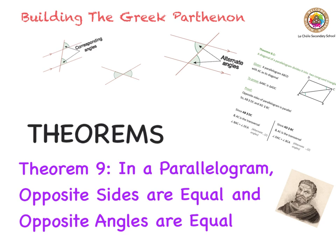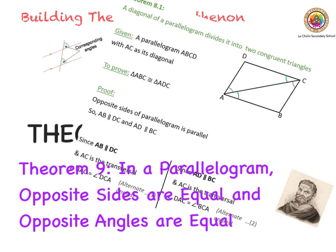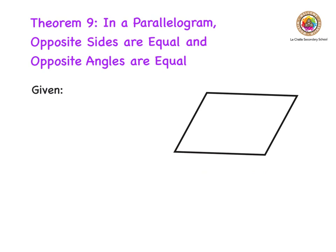Continuing on, building the Greek Parthenon today. We're looking at Theorem number nine, and that is that in a parallelogram the opposite sides are equal. We can see here we have a parallelogram, so this side here is equal to this side here, and this side here is equal to this side here. Then, opposite angles are equal: angle D is equal to angle B, and angle A is equal to angle C. That's what we're going to prove today. Theorem nine: in a parallelogram, opposite sides are equal and opposite angles are equal.